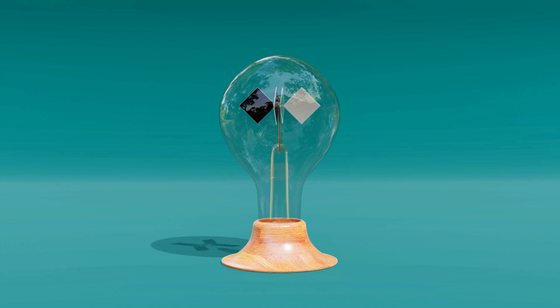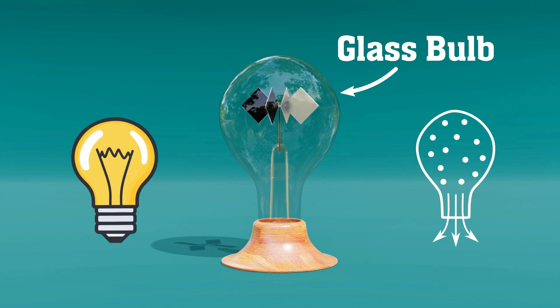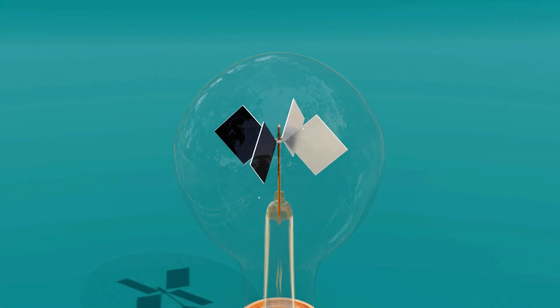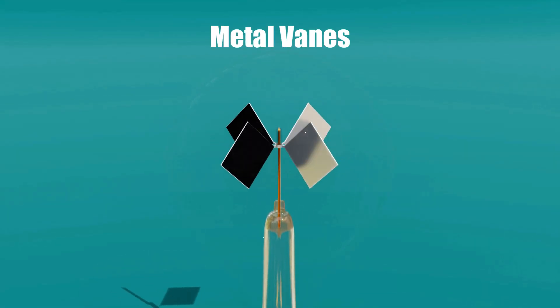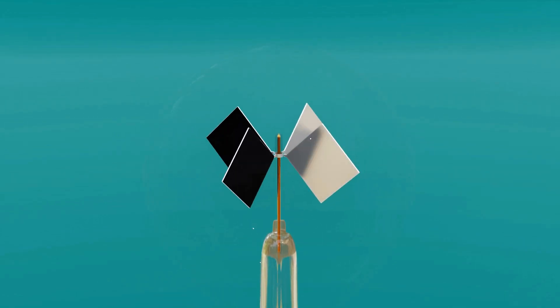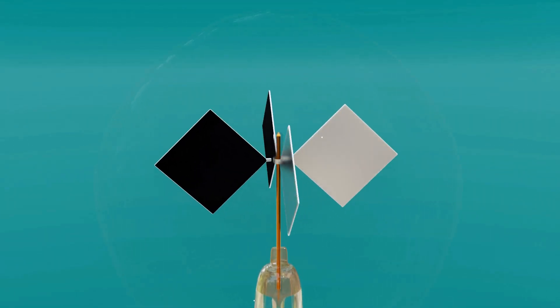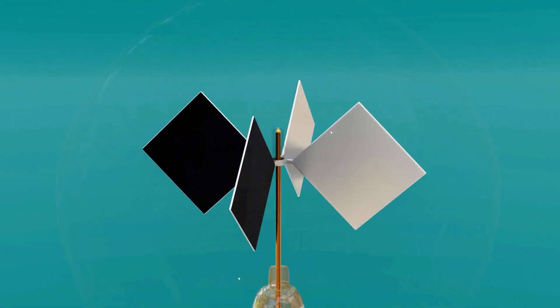At its core, the radiometer consists of just a few basic parts. First, there's the glass bulb. It resembles a light bulb, but most of the air inside has been removed, creating a low-pressure environment. Inside the bulb, you'll find four thin metal veins mounted on a spindle. Each vein is painted black on one side and polished on the other, and that's no accident. They're designed this way to respond differently to light.